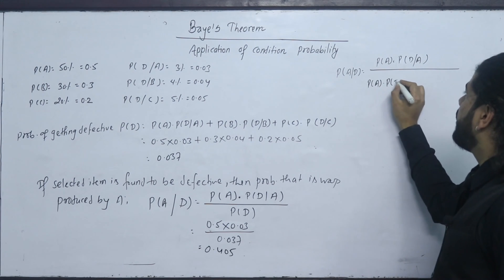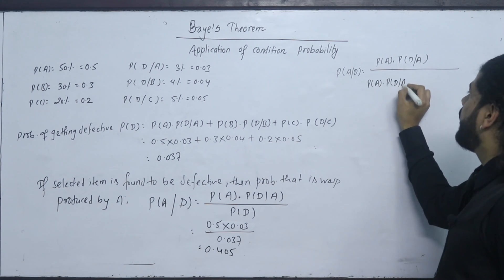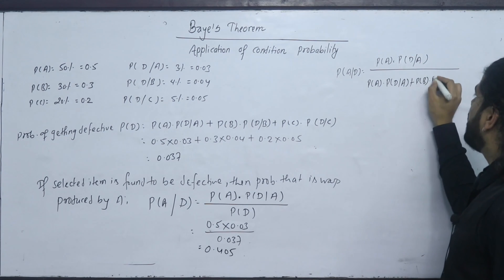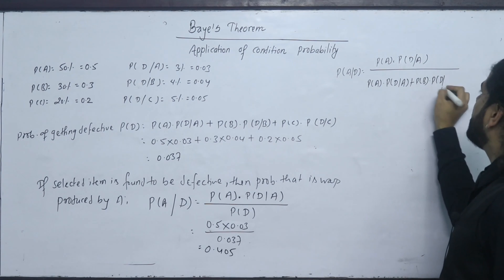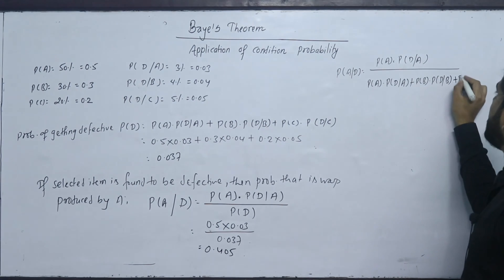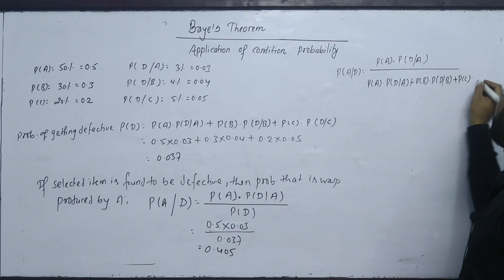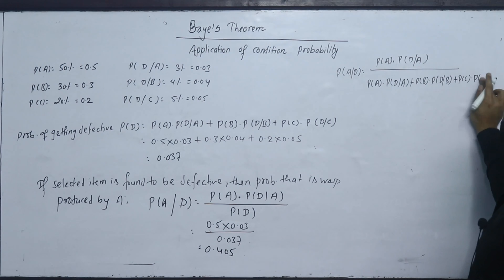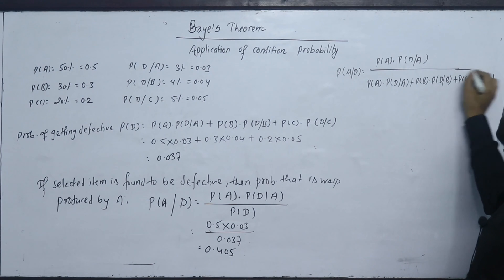Similarly, we calculate P(B|D) = P(B)·P(D|B) / P(D), and P(C|D) = P(C)·P(D|C) / P(D) to find the probability the defective item came from machine B or C.